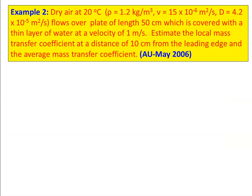We take example number two from May 2006. Consider vapor-dry air at 23°C with density 1.2 kg/m³, kinematic viscosity 15 × 10⁻⁶ m²/s, diffusion coefficient 4.2 × 10⁻⁵ m²/s, flowing over a plate of length 50 cm covered with a thin layer of water at a velocity of 1 m/s. Estimate the local mass transfer coefficient at a distance of 10 cm from the leading edge and the average mass transfer coefficient.